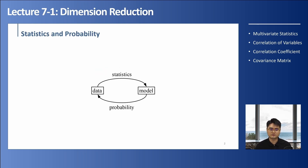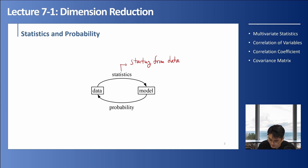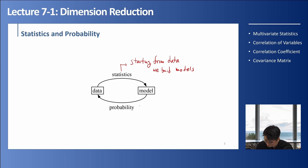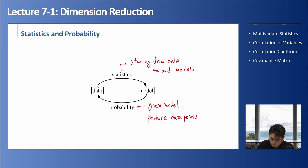Let's talk about the difference between statistics and probability. Statistics start from data — we build models from statistics. For probability, we start from a given model, and that model produces data based on probability. So from data we learn statistics and build a model, and from a model it produces data based on probability.